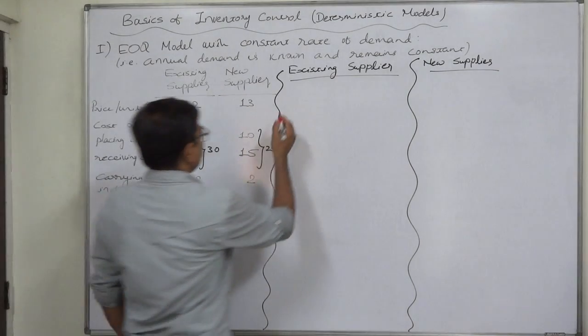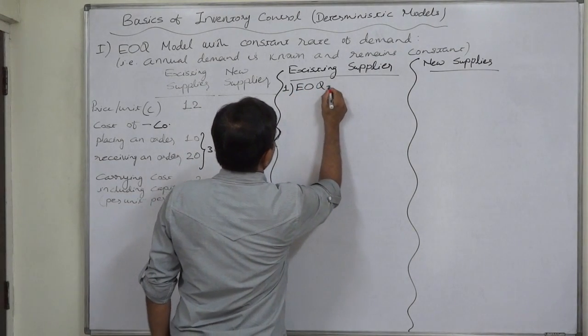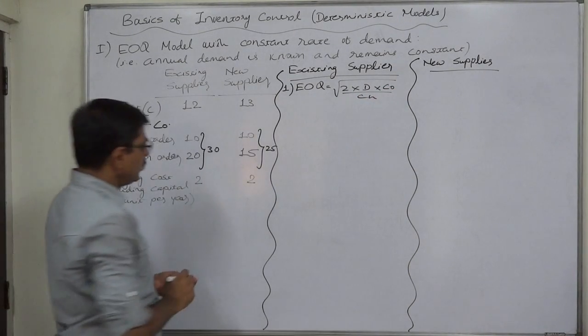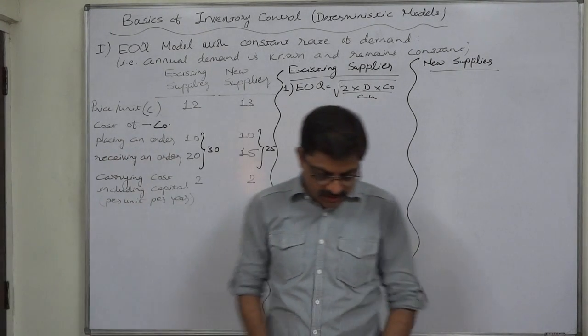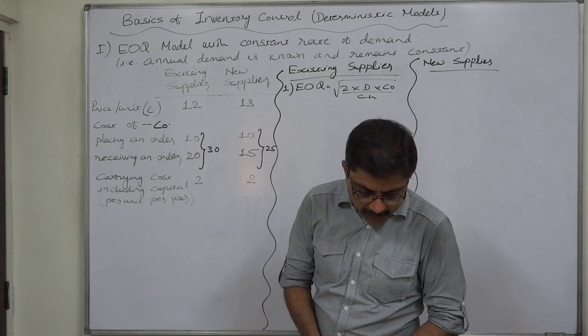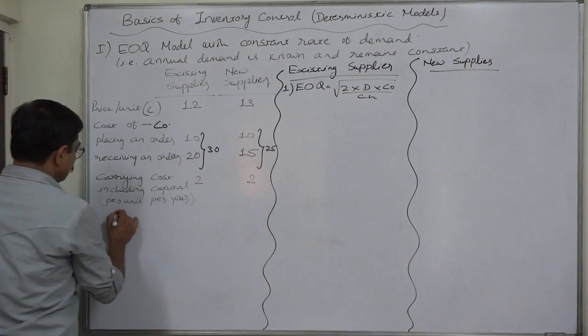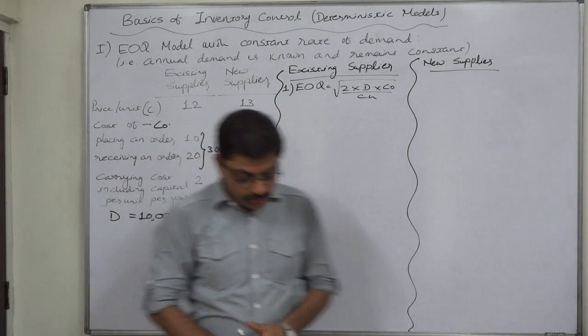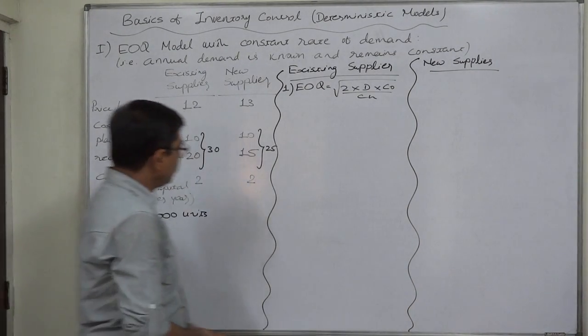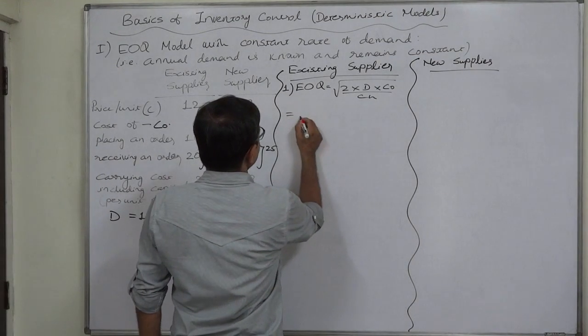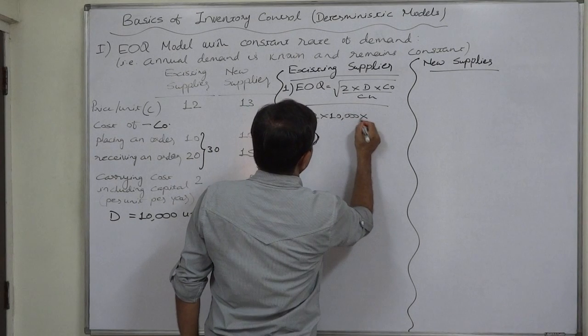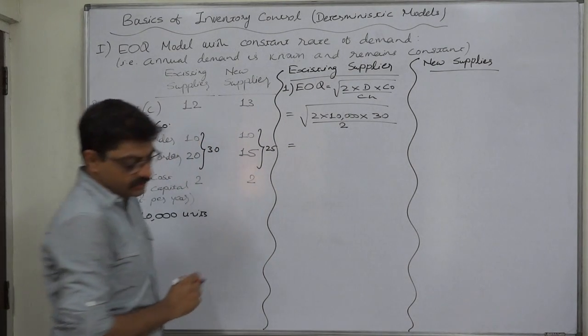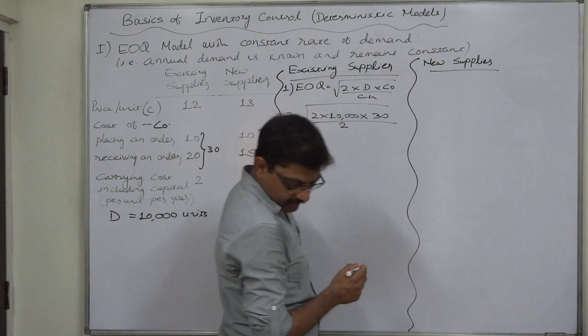First, we are going to calculate EOQ: square root of 2 times D times CO divided by CH. One thing which I forgot to mention here is the annual requirement D is given to be 10,000 units. So now let us calculate everything. In this case, the EOQ will be under root 2 into 10,000 into 30 divided by 2, so ultimately we need to get the square root of 3 lakh. That comes to 547.72 units.